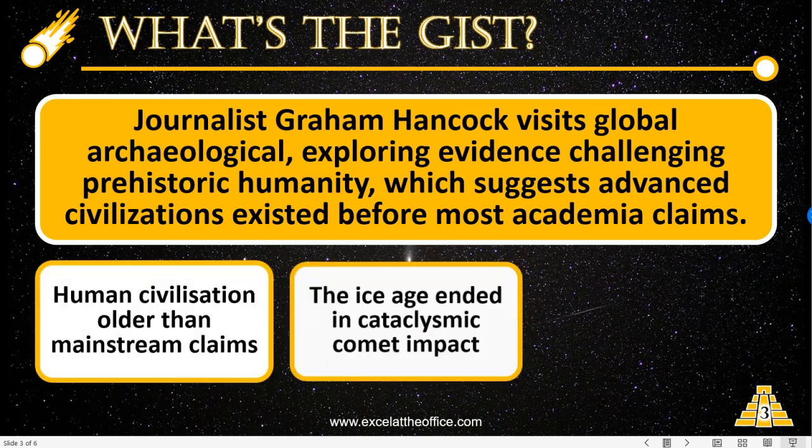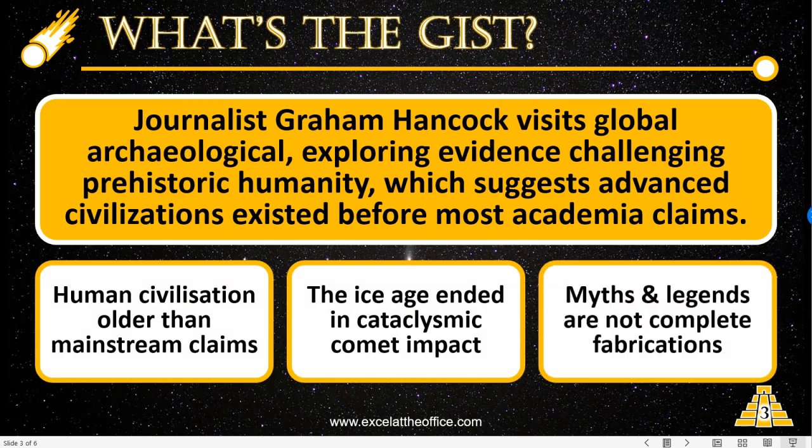The three main tenets — which I've done here with simple rounded rectangle shapes with animations so they come on one by one — are: first, that human civilization is much older than claimed by mainstream archaeology. As he describes, everything just seems to be getting older. The more things that get found, the further back human civilization gets pushed. One big example being Gobekli Tepe, a really interesting archaeological site, multiple times the magnitude of Stonehenge and about 6,000 to 8,000 years older.